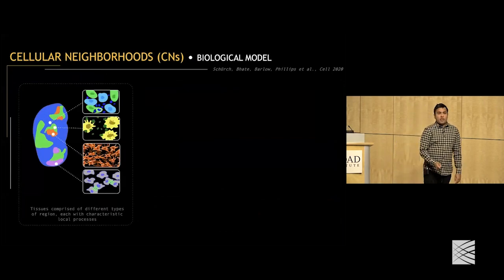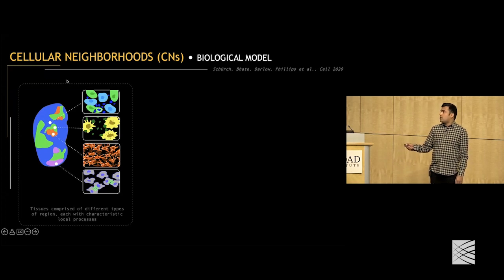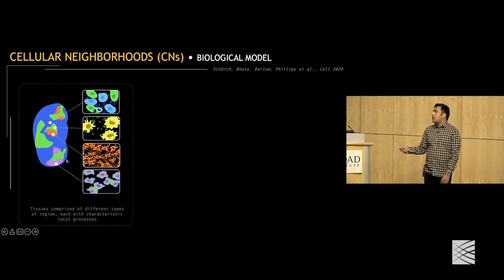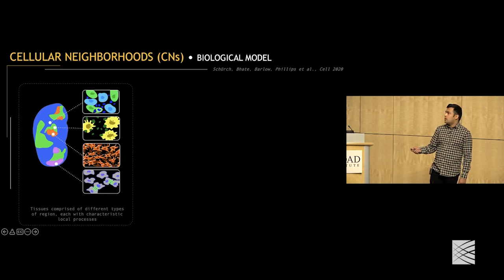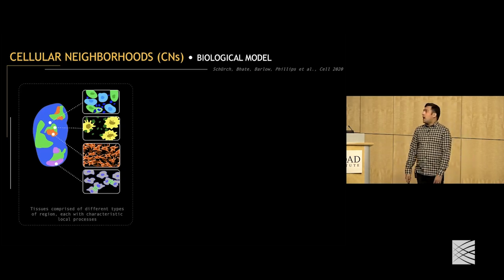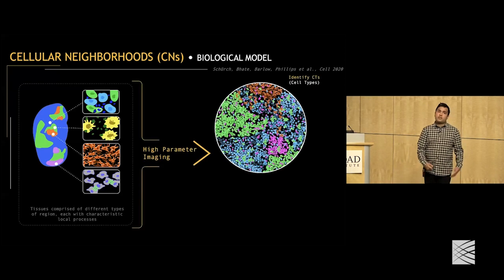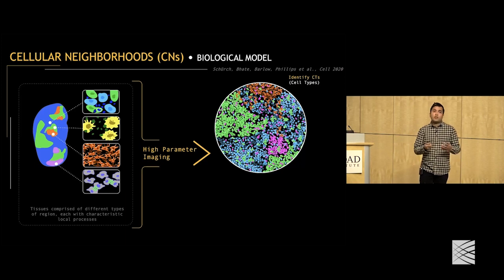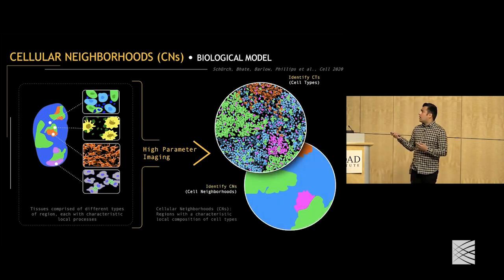Our biological model is that tissues are comprised of different types of regions. Within each type, there'd be different local processes ongoing — for example, dividing cells in one region, cells secreting certain molecules in another, cells interacting in a third. Just as it's standard in high-parameter imaging to identify single cells and their types, we reasoned that the local features to identify these regions is the local composition of cell types. We define these objects called cellular neighborhoods: regions with a characteristic local composition of cell types.